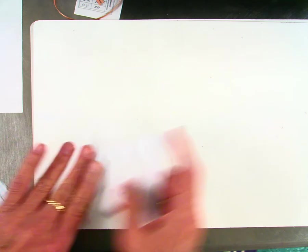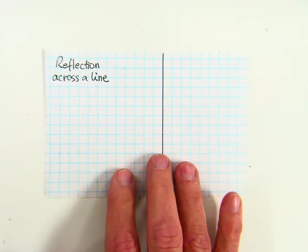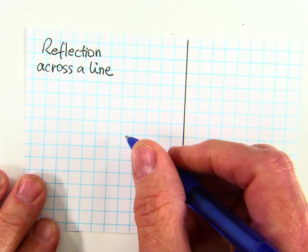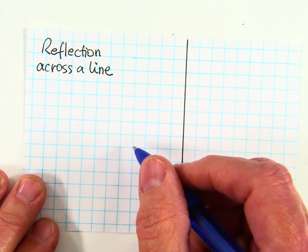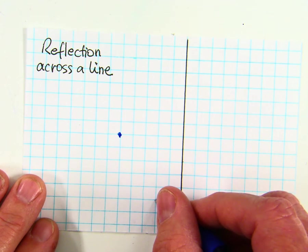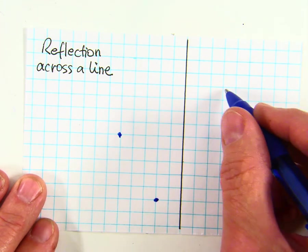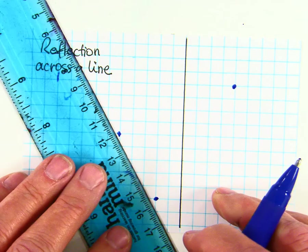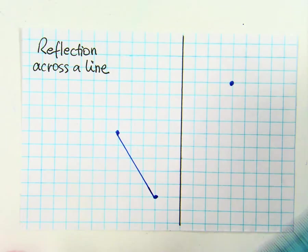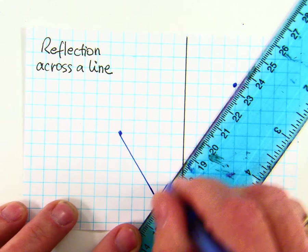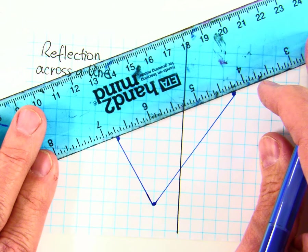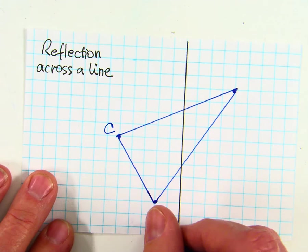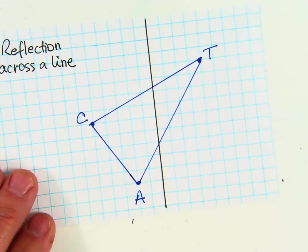We're going to do some exercises here. You'll need some little papers or some graph paper. The first one we're going to do is reflection across a line. So choose two points on the left of the line. It doesn't matter which two. And then another point on the right of the line. Make a triangle. Label it. We'll give it a name. I think I'll name this one Cat. C-A-T. So there is triangle Cat.